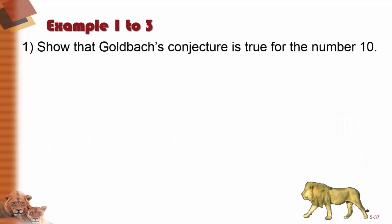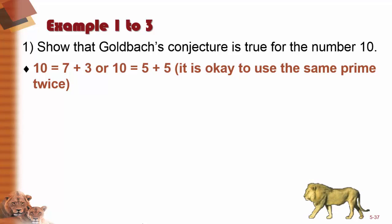In example number 1, we're asked to show that Goldbach's conjecture is true for the number 10. Well, 10 is equal to 7 plus 3 or 10 is equal to 5 plus 5. It is okay to use the same prime number twice. So 7 is a prime number, 3 is a prime number, and we add those together and we get 10. And similarly, 5 is a prime number and 5 is a prime number.